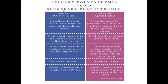In primary polycythemia, it is the condition of the bone marrow which makes too many RBCs and platelets. There is dysfunctioning of the bone marrow, so all blood cell lines will be higher — RBCs, WBCs, and platelets. All three cell lines will be more.